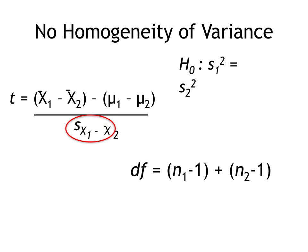What if the homogeneity of variance between my two groups had been violated — in other words, I had to reject the null hypothesis about the variance in the two groups being the same? Then I have to adjust my standard error and my degrees of freedom. The formulas are in your textbook, but no one does this by hand.